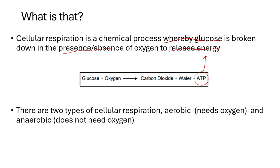For us to have energy, glucose — which is a nutrient — reacts with oxygen, and the products of that reaction are carbon dioxide, water, and energy. Cellular respiration releases carbon dioxide, water, and also energy. We usually focus on the energy because ATP is something we can relate to — after you eat you are active because you have enough ATP. Glucose is broken down in the presence or in the absence of oxygen.